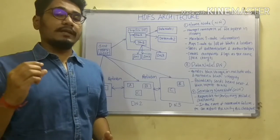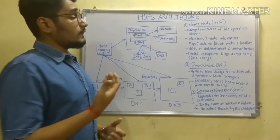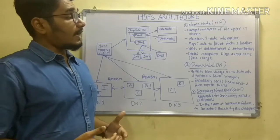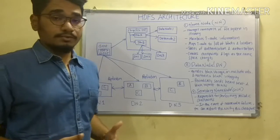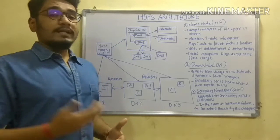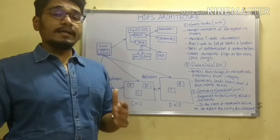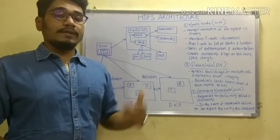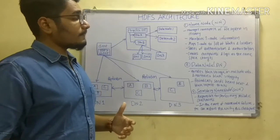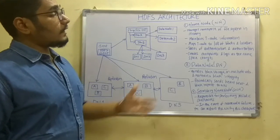The Name Node maps blocks to their memory addresses, locking all the addresses of the memory chunks. It also takes care of authentication and authorization — controlling who has read/write access and handling security. Additionally, it creates checkpoints and logs whenever the namespace changes, generating a new log file at regular intervals to manage traffic across the file systems.